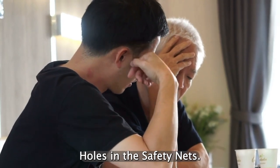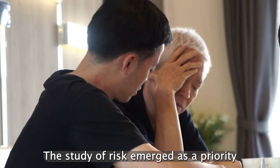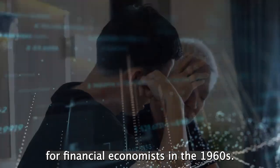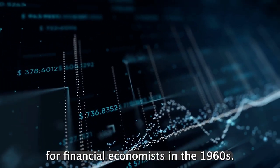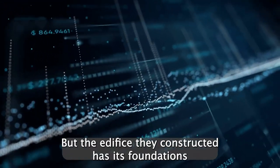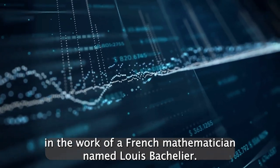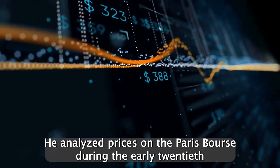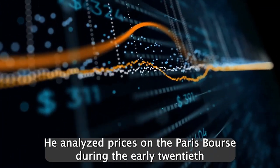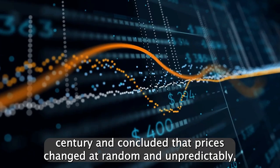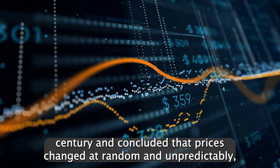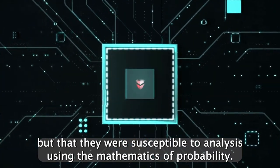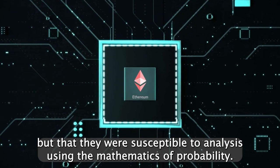Holes in the safety nets. The study of risk emerged as a priority for financial economists in the 1960s. But the edifice they constructed has its foundations in the work of a French mathematician named Louis Bachelier. He analyzed prices on the Paris Bourse during the early 20th century and concluded that prices changed at random and unpredictably, but that they were susceptible to analysis using the mathematics of probability.